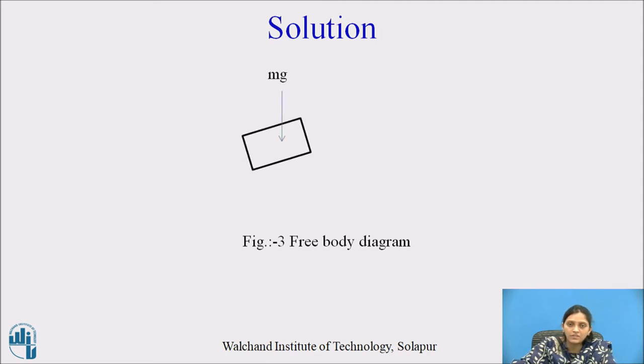Let us see the solution of the question. The block of weight Mg is given on the inclined plane, and the rope is pulling that block with the same force, Mg. Resolve Mg in x and y directions: Mg sin theta in x direction and Mg cos theta in y direction.